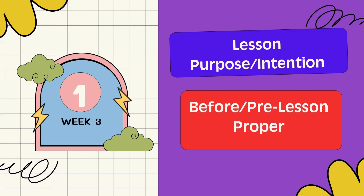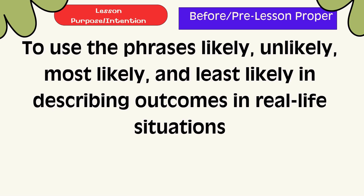Lesson Purpose and Intention: To use the phrases likely, unlikely, most likely, and least likely in describing outcomes in real-life situations.